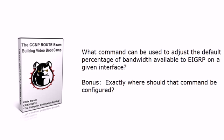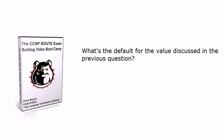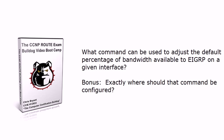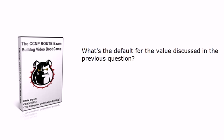Question three: what command can be used to adjust the default percentage of bandwidth available to EIGRP on a given interface? I actually have two more sub-questions regarding that. Second: where should that command be configured? And third: what's the default value for that? So three questions on EIGRP bandwidth on an interface — what command adjusts it, where it's configured, and what the default is.